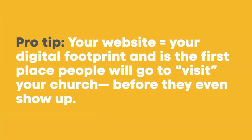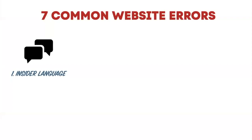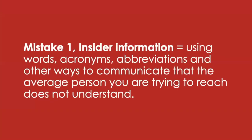That's probably why you're in this training. Seven common website errors — seven things not to do and seven things to do. Mistake number one that I see a lot of churches and nonprofits make is they overload insider language: using words, acronyms, abbreviations, and other ways to communicate that the average person you are trying to reach does not understand.